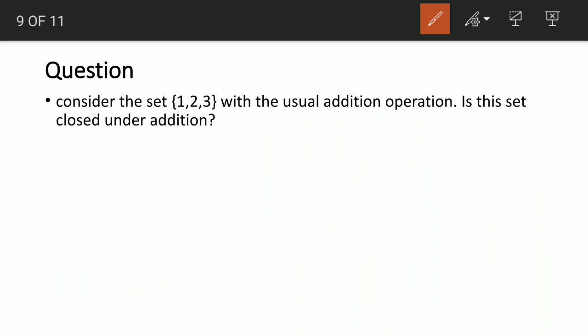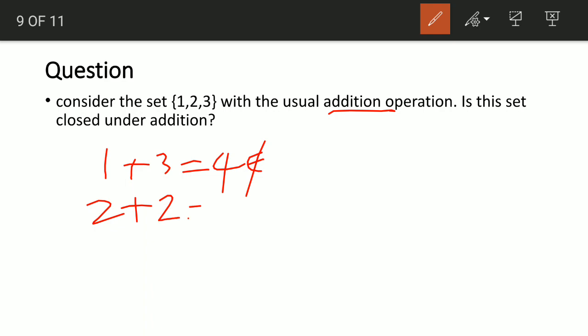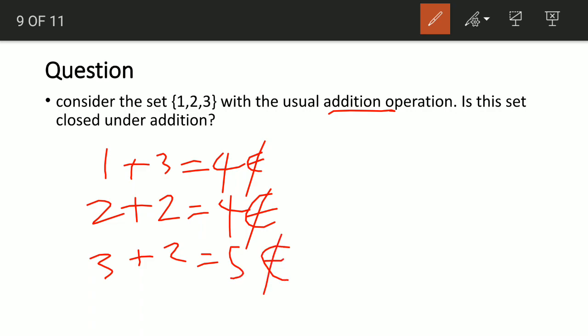Consider the set {1, 2, 3} with the usual addition operation. Is the set closed under addition? The answer is no. For example, 2 + 3 = 5, which is not an element of this set. Also, 2 + 2 = 4, which is not in the set, and 3 + 2 = 5, also not in the set. So the operation is not closed.